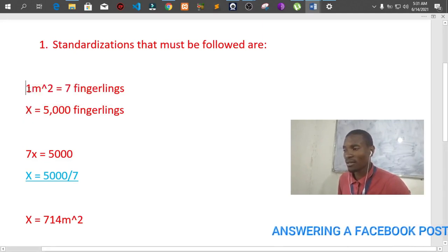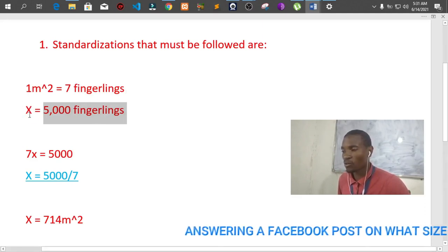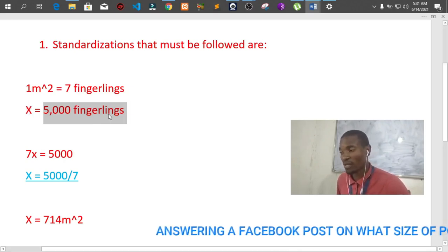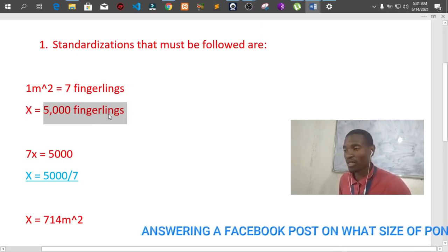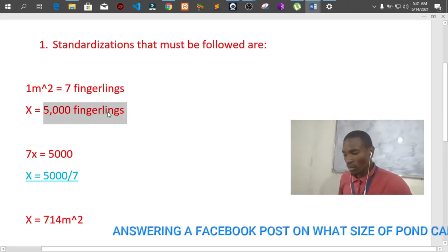So now, if that is the case, then what size of the pond can hold 5,000 fingerlings? When you do a simple math, you say I don't know the size of the pond, you put X, and equal to the number of fingerlings because you do know how many fingerlings you have.